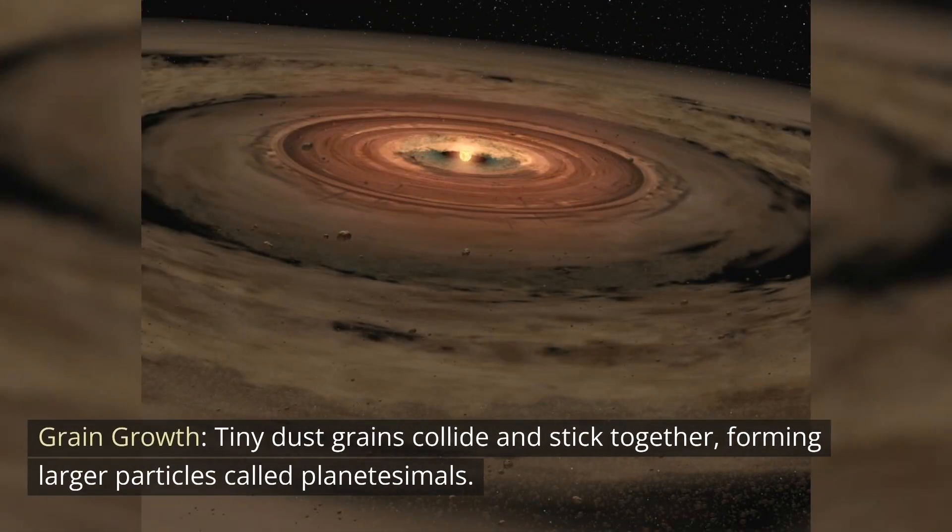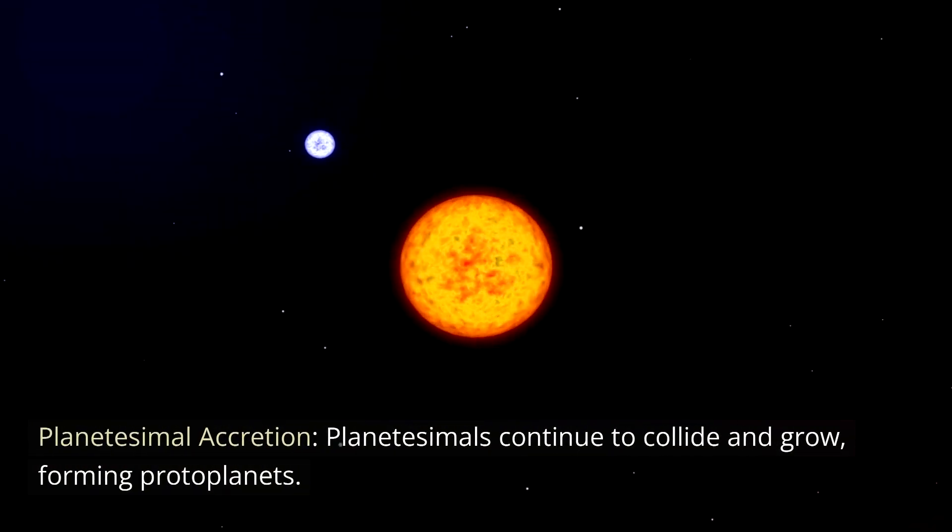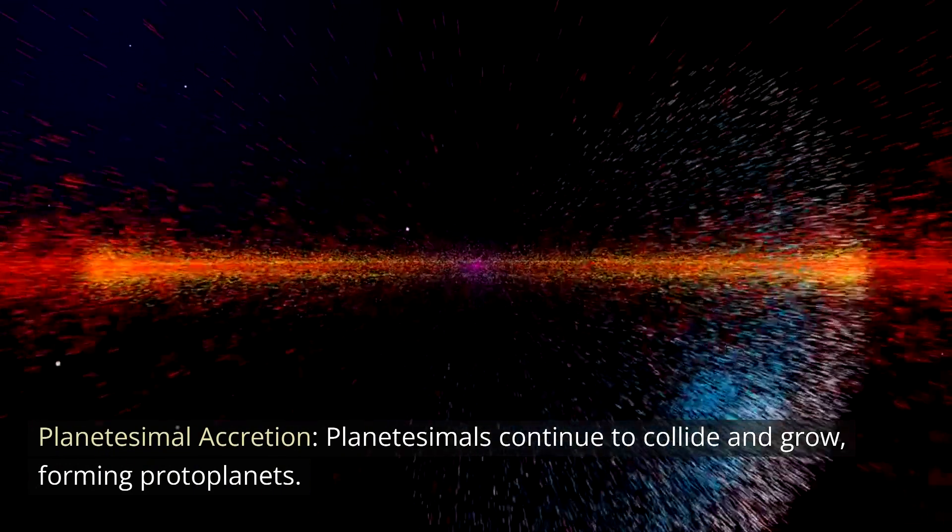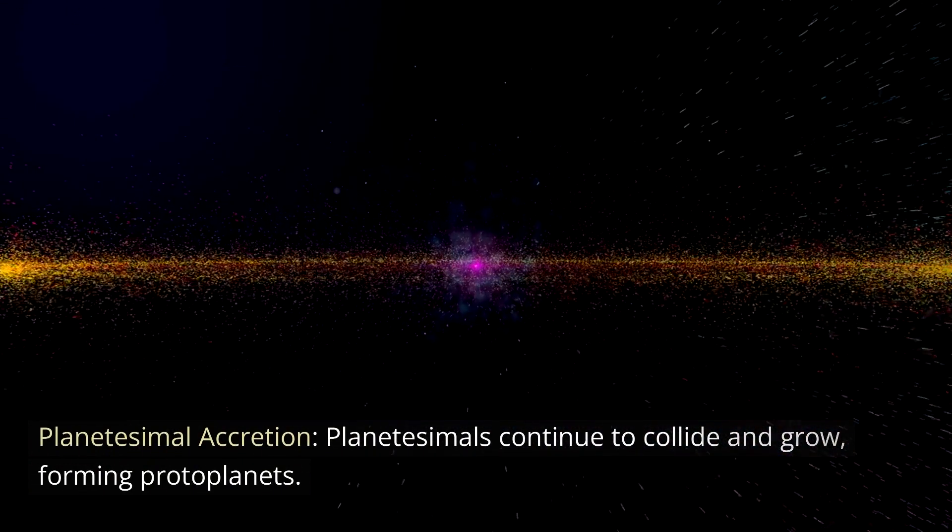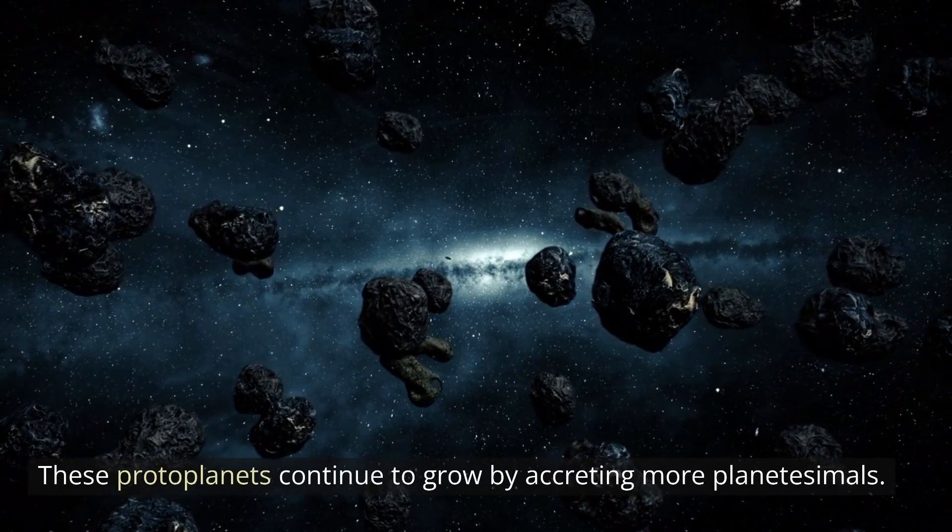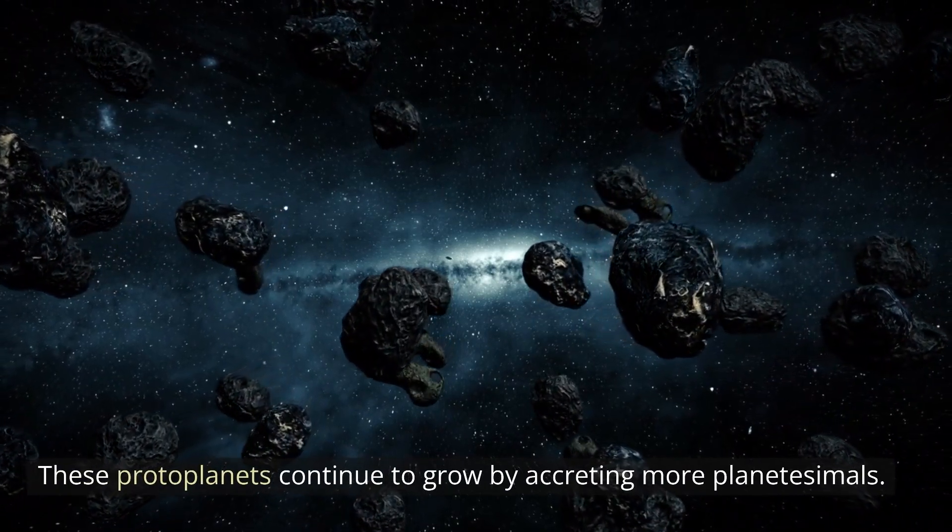Grain growth: Tiny dust grains collide and stick together, forming larger particles called planetesimals. Planetesimal accretion: Planetesimals continue to collide and grow, forming protoplanets. These protoplanets continue to grow by accreting more planetesimals.